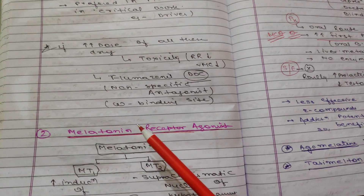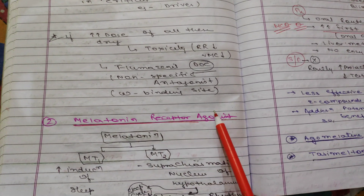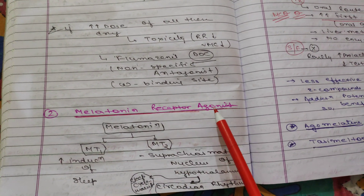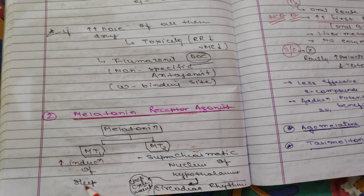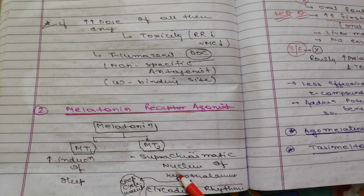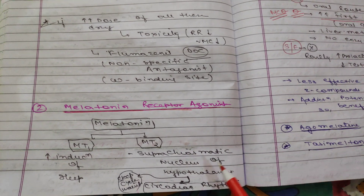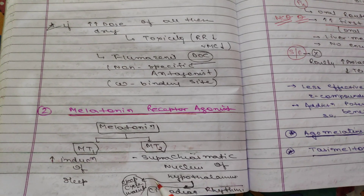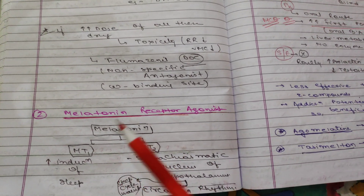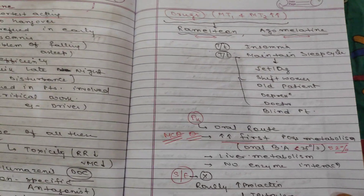The next group after GABA-A stimulators is melatonin receptor agonists. Melatonin can bind to MT1 or MT2 receptors. MT1 receptor stimulation leads to induction of sleep and can treat insomnia. MT2 receptor activity is seen in the suprachiasmatic nucleus of the hypothalamus and is responsible for maintaining circadian rhythm and the sleep cycle.